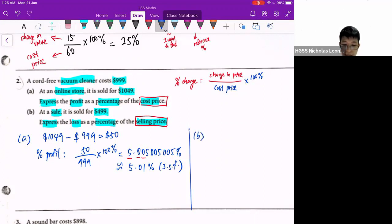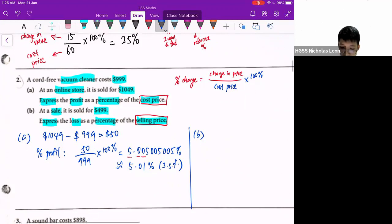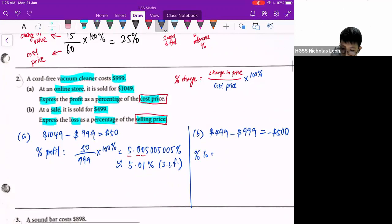Next, part B. They asked me to calculate the loss as a percentage of the selling price. So please take note whether it is the cost price or selling price. So first thing, I must calculate what is the change. So in this case, $499 minus $999 will give me negative $500. So negative $500 means that there's a loss. So to calculate what is the percentage loss, I take the loss, which is $500, over the selling price, which is $499, times 100%. So when you calculate it out...